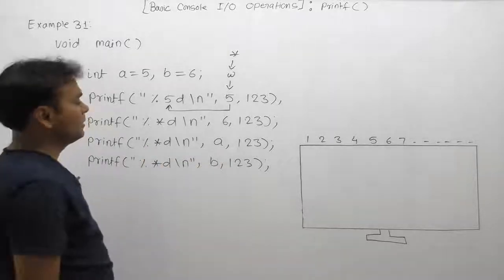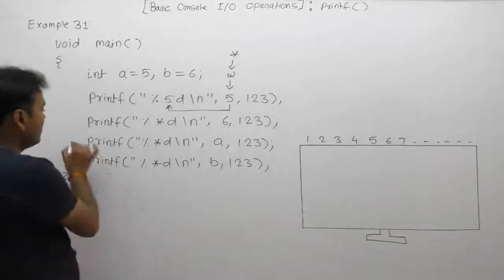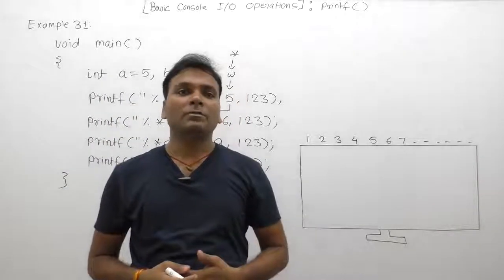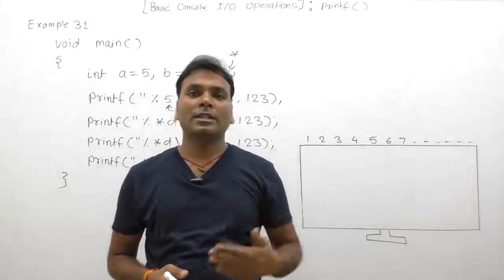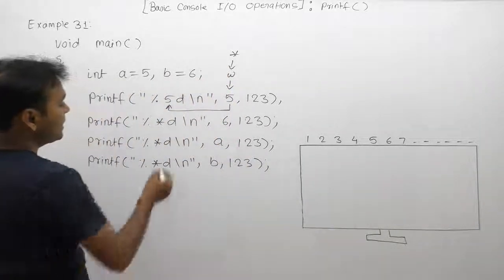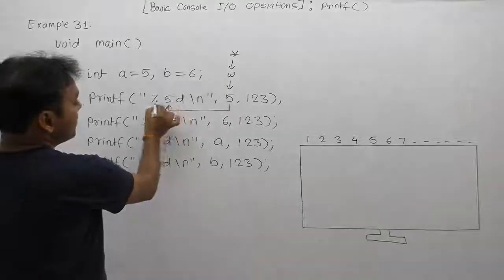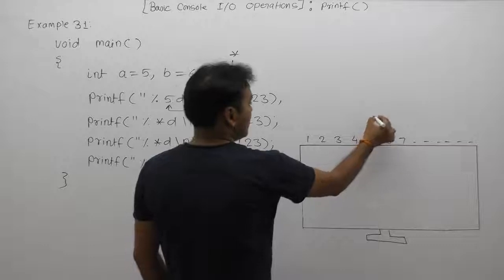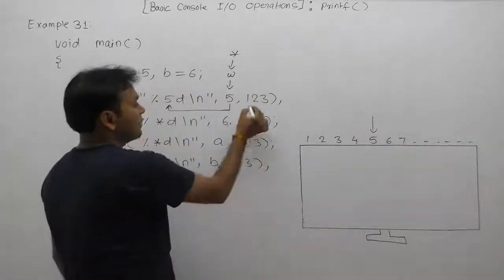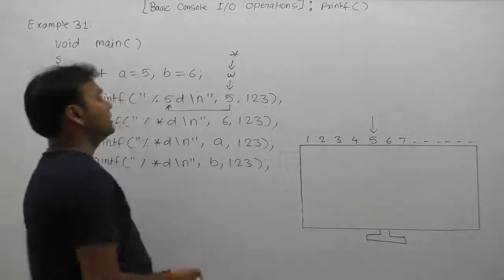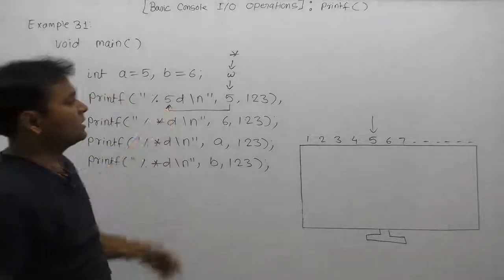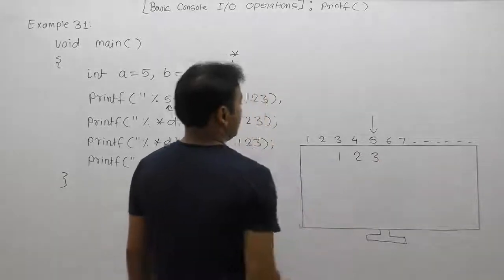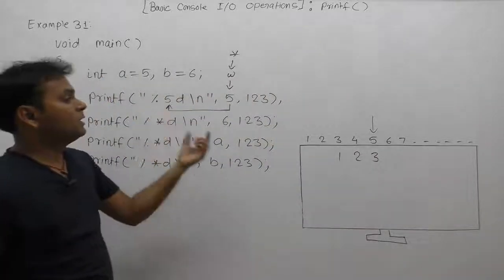This dynamic width approach becomes very useful in the next cases when we are displaying different types of patterns based on asterisks or strings. In that case it will become like %5d — according to the total width of 5. The number 123 is displayed with a total width of 5. Default justification is right-to-left, so the number 123 is right-aligned, and the default padding symbol is spaces.